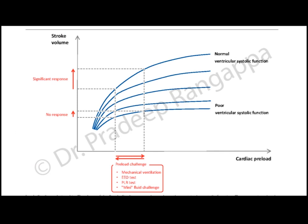The whole philosophy of fluid resuscitation is determined by the Frank-Starling curve. There are two major domains: patients with normal LV function show a very good response to a fluid bolus in terms of cardiac output, as opposed to patients with poor ventricular function, whose cardiac output response to a fluid bolus is suboptimal. Those patients need advanced hemodynamic variables to determine whether they would respond to a fluid bolus.